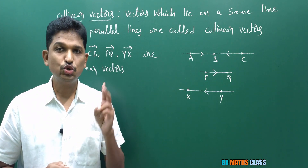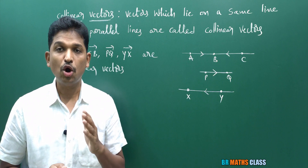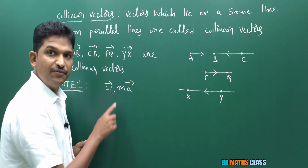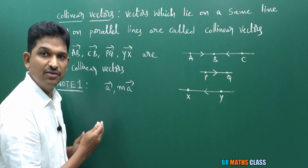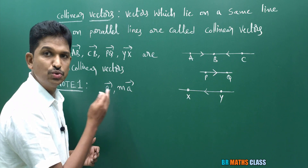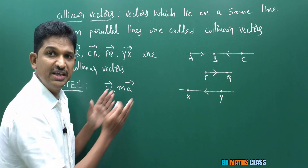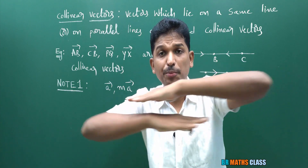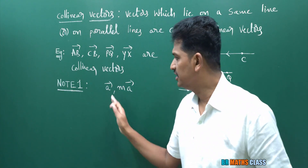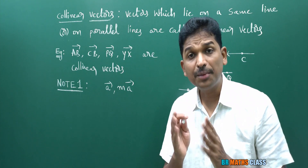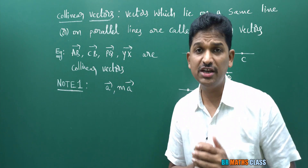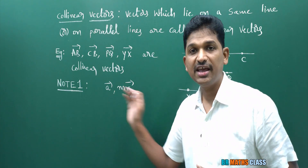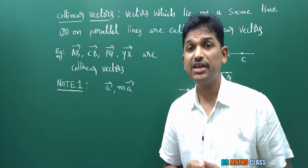Now we are going to learn two important note points on collinear vectors. What do you know about A bar and MA bar? If M is positive, A bar and MA bar will be in the same direction. If M is negative, A bar and MA bar are in opposite direction. A bar and MA bar are parallel vectors — they are collinear vectors. You memorize this.